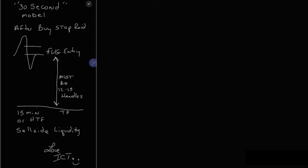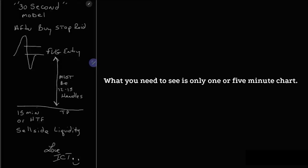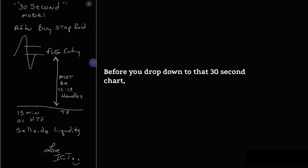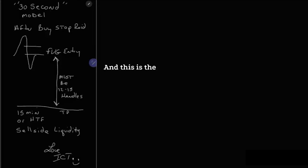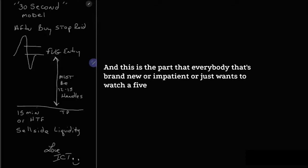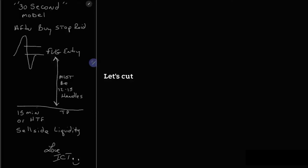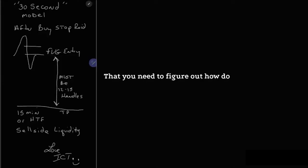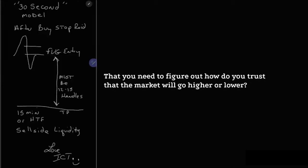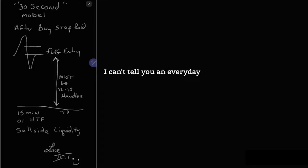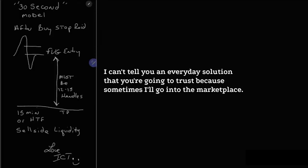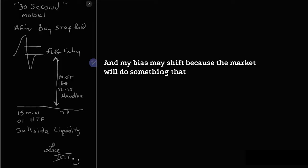30-second chart. What you need to see first is the one or five-minute chart before you drop down to that 30-second chart. You have already arrived at what you think the market's likely to do. This is the part that everybody brand new or impatient, wanting to watch a five-minute trainer video, misses. You need to figure out how to trust that the market will go higher or lower.